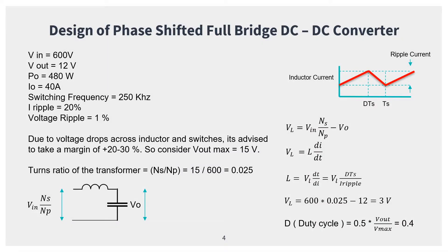Our design input parameters are: input voltage of 600 V, output voltage of 12 V, output power of 480 W, load current of 40 A, and switching frequency of 250 kHz. We'll consider a maximum current ripple of 20% and a maximum voltage ripple of 1%.